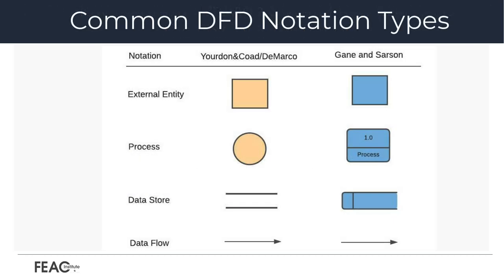Let's first examine the common notation types you'll encounter when constructing a DFD. The two primary notations are the Yourdon and DeMarco notation and the Gane and Sarson notation. Visually, the primary differences can be seen in how processes and data stores are represented. The Yourdon and DeMarco notation depicts a process as a circle and the Gane and Sarson as a rounded rectangle. The data store is represented as two parallel horizontal lines in the Yourdon-DeMarco notation and as an open-ended rectangle with a vertical line in the Gane and Sarson notation.